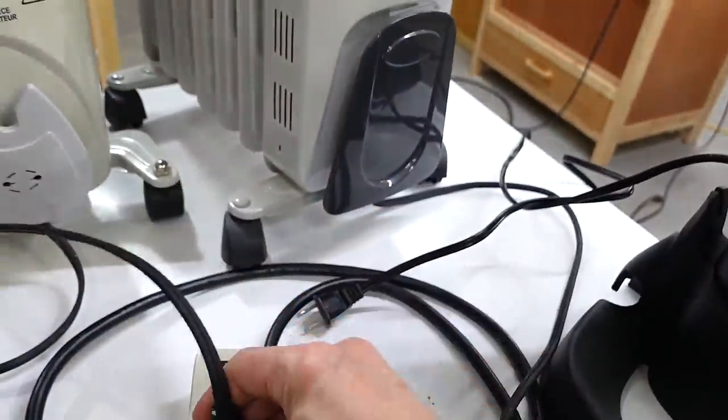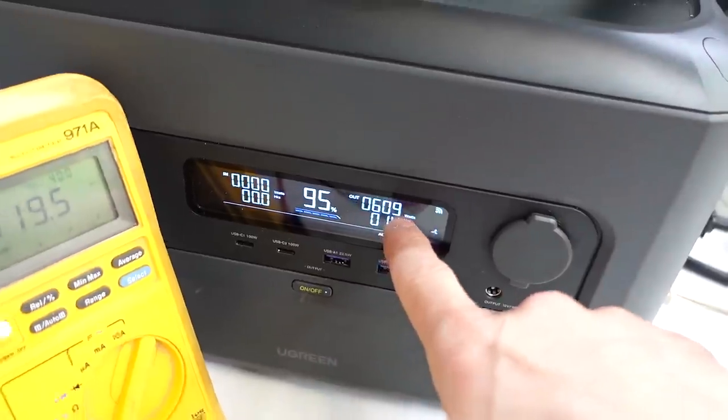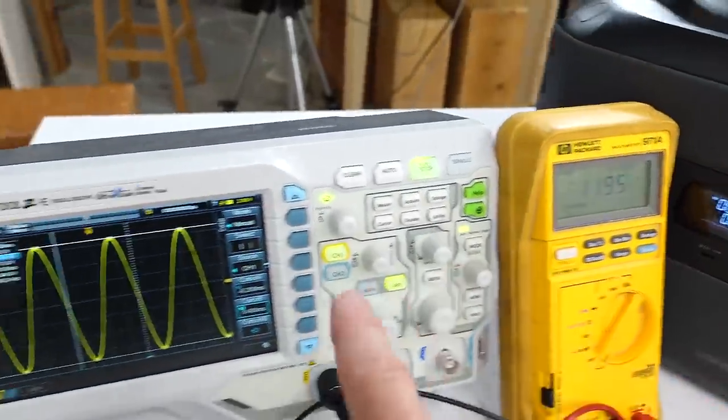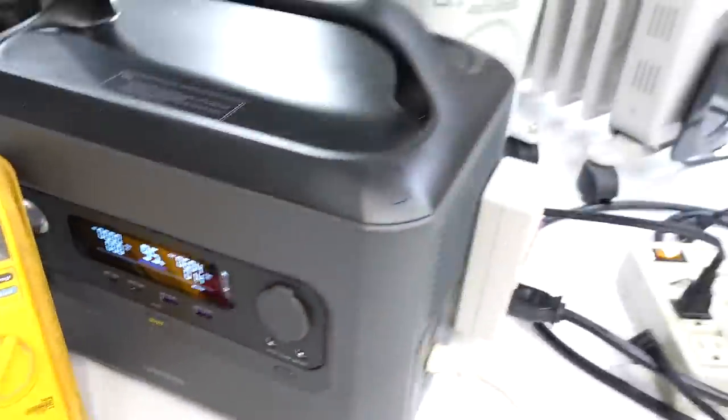Let's plug in one space heater. This one is set to 600 watts. And now this says it's putting out 609 watts. Voltage is still the same. Waveform is still a sine wave. Kill a watt says 603 watts, so pretty close. This says 605 watts right now.